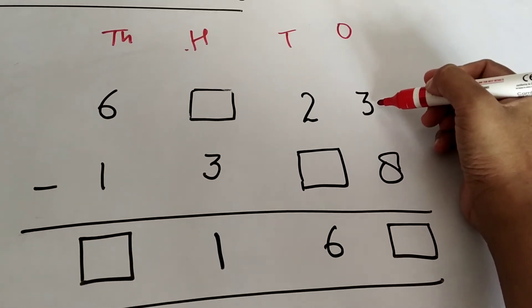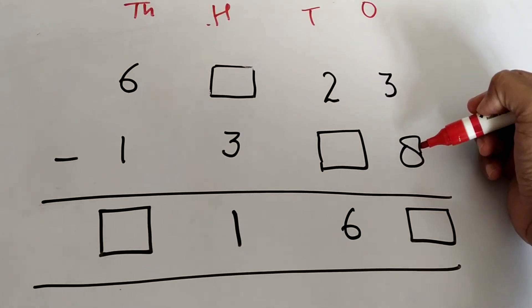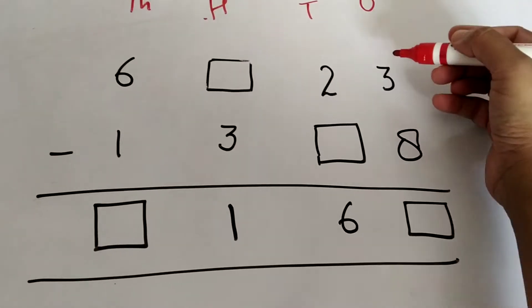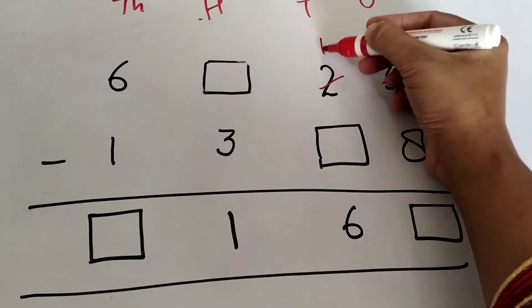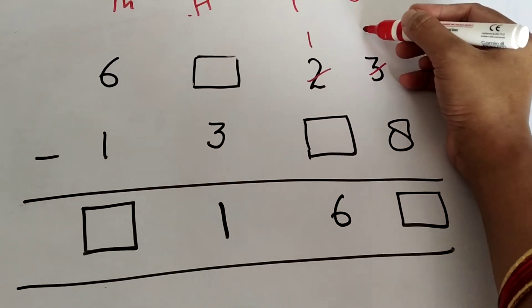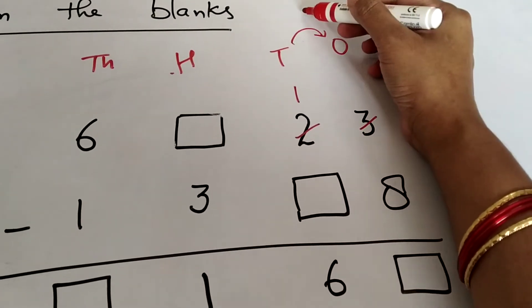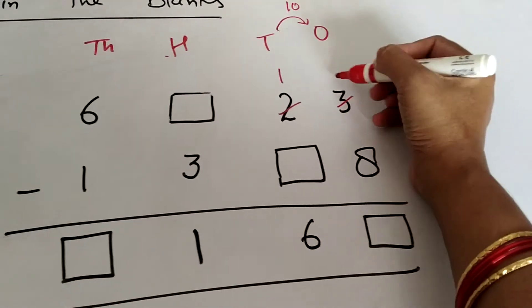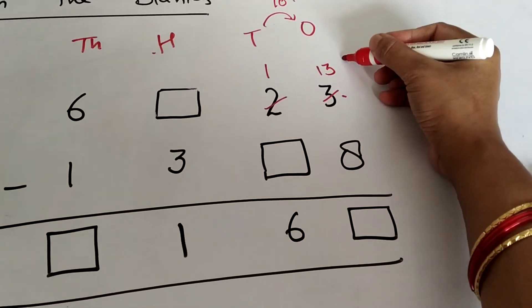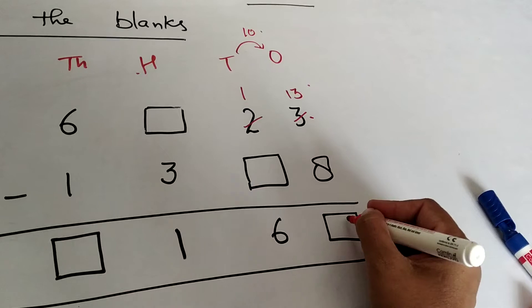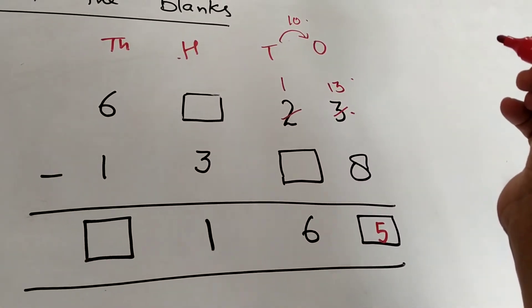Now we know that from 3 we cannot subtract 8. So 3 will go and borrow from 2. 2 will become 1 and it will give 10. 10 ones here and it will become 13, 10 plus 3 equals 13. Now 13 minus 8 is 5, so we got this box.